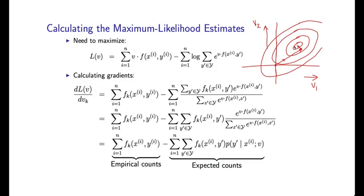So the gradients actually take a fairly convenient form. So remember, again, L of V is the following. So I have sum equals 1 to N of V dot F, sum equals 1 to N of this log function. And let's see what happens when we differentiate this with respect to a particular parameter, V sub K. Okay.